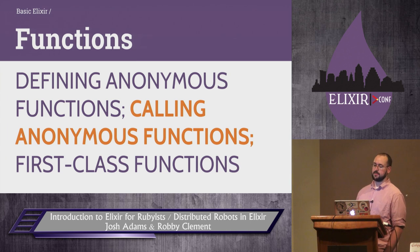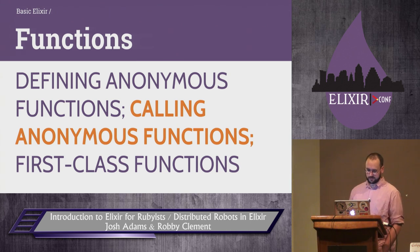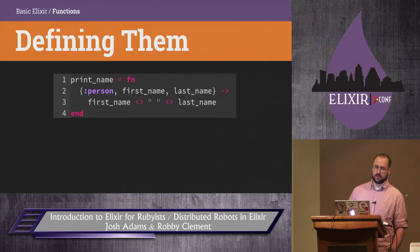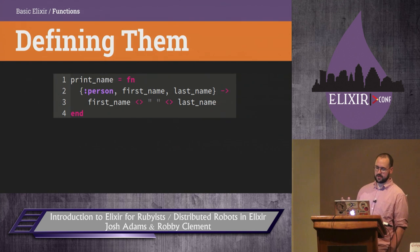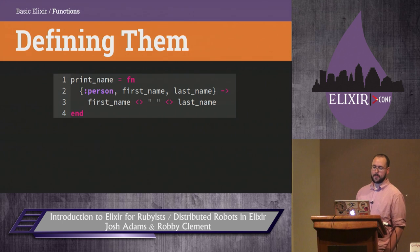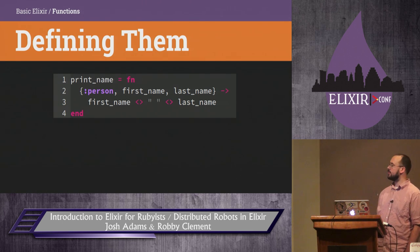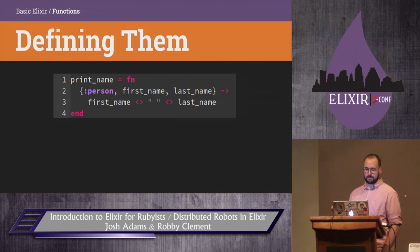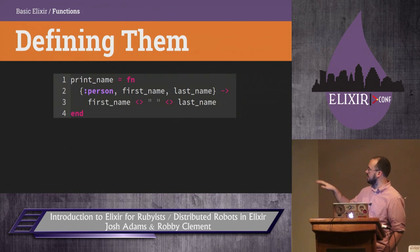In Elixir, functions are first-class types. This isn't surprising — it's a functional programming language. So let's look at defining anonymous functions, calling them, and then using them as first-class types. Anonymous functions are defined with the fn keyword. They take parameter lists and bodies separated by arrows. The parameter lists are used for pattern matching.